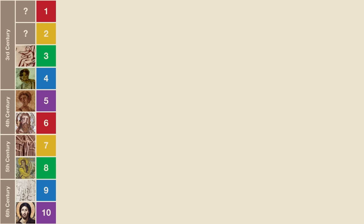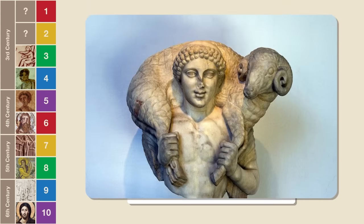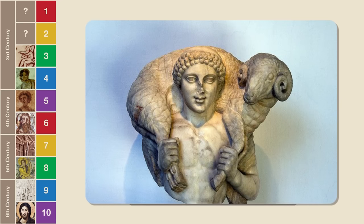Moving on to number two, which is this image that comes from the Catacomb of Calixtus and dates to around 250 CE. Here, Jesus is once again depicted as the Good Shepherd. He's wearing a short tunic, the kind a shepherd at that time would have worn. Note that he also looks quite young, as he most likely would have been, considering that he died in his early 30s. You should also note that seeing a religious figure with a lamb or goat around his neck was not something that ancient Greeks and Romans would have found all that strange, as it was commonly used in depictions of the god Hermes or Mercury.